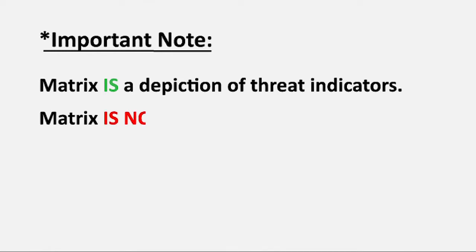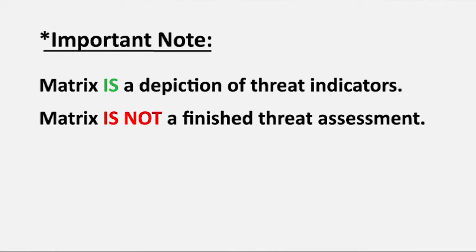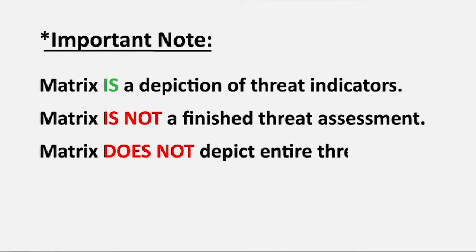This video is designed to be an introduction to the Methods of Contact and Methods of Operation matrix, and also a guide to help you understand and convey this specialized look at the targeting of technologies resident at cleared contractor facilities. At its core, the Methods of Contact and Methods of Operation matrix is a depiction of where industry has seen suspicious contacts. It is important to note that the matrix is a depiction of threat indicators, but it is not a finished threat assessment and does not depict the entire threat picture.